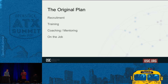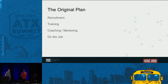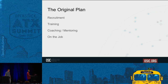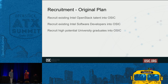We want to show you our original plan so we can be transparent about what we discovered. Our original plan had four tenets: recruitment — we have to find this talent; training — we have to train them; a coaching or mentoring component, pairing them with veterans in the community; and on-the-job learning as well.